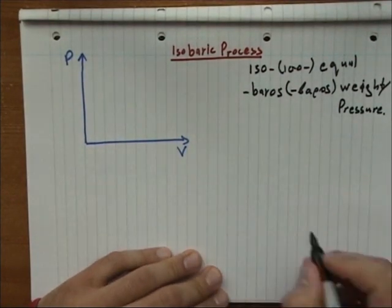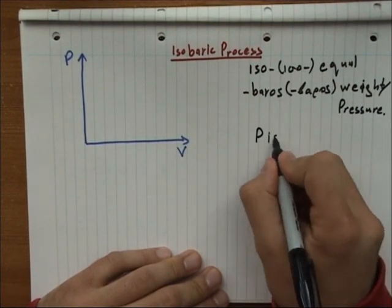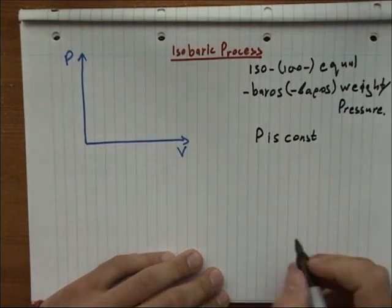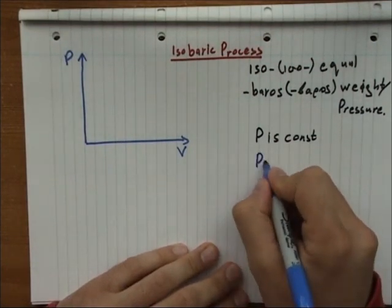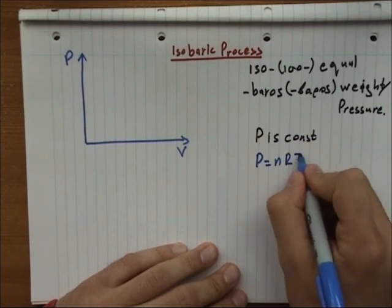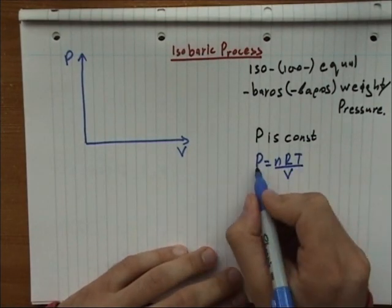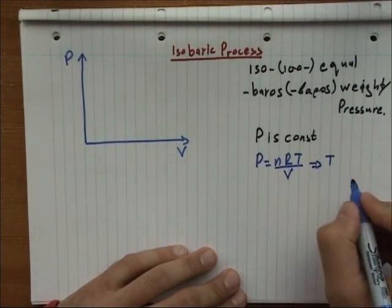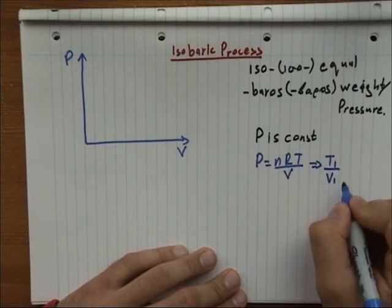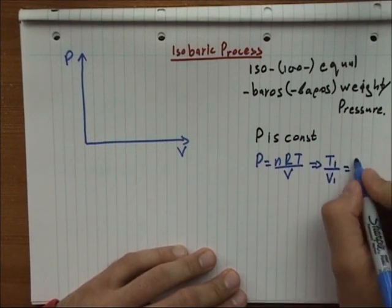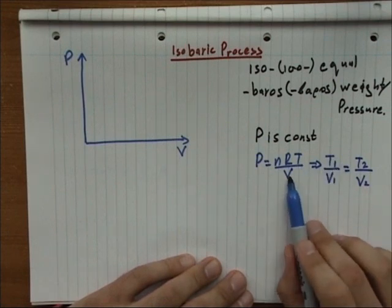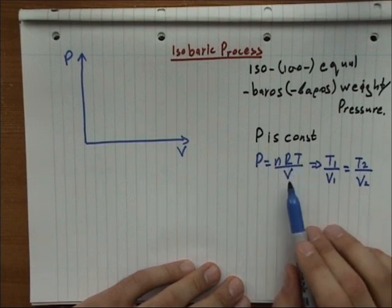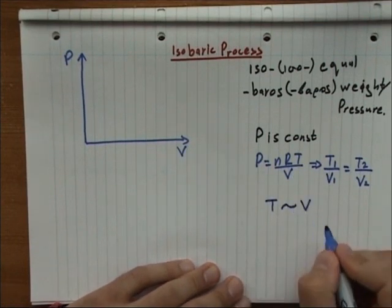So we have that in this case the pressure is constant. If we take our gas law once again, P equals nRT over V, and P is constant, it means that T1 over V1 equals T2 over V2. This means the temperature and volume of the gas are proportional to each other.